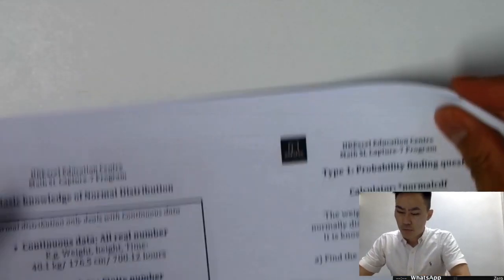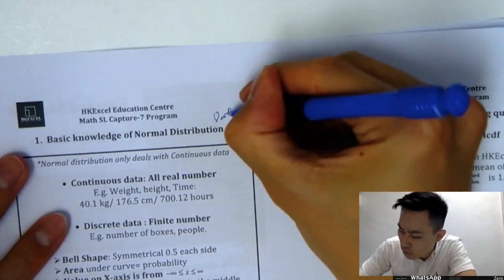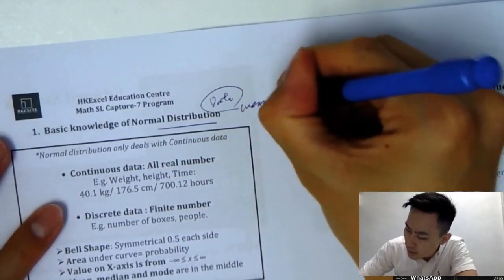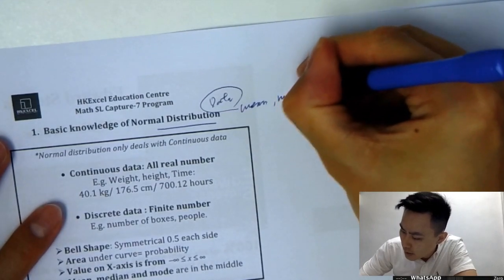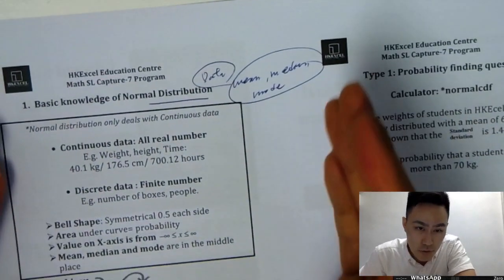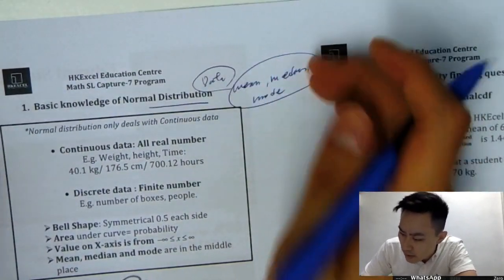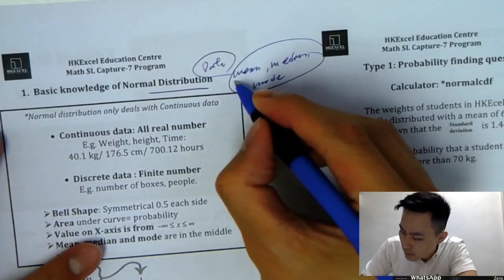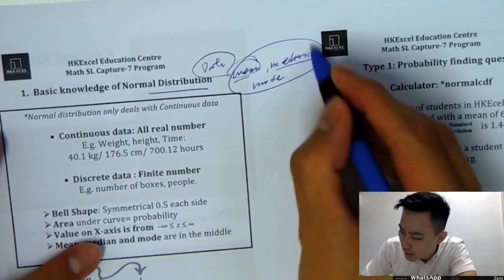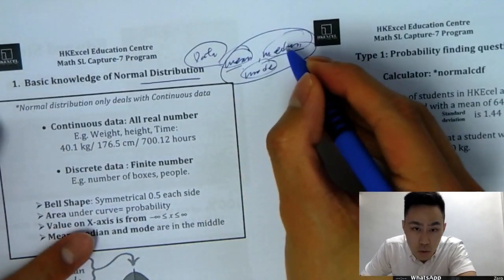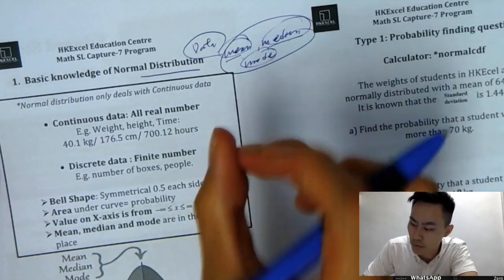So what does it mean by normal distribution? When the data are normally distributed, you will have the same mean, median, and mode. It's not necessary for all data to have the same mean, median, and mode. But when mean, median, and mode are equal, the data are normally distributed.